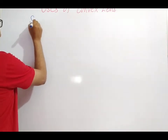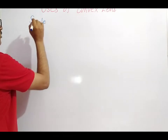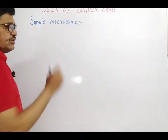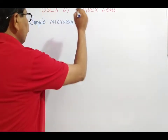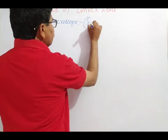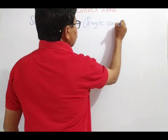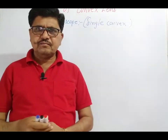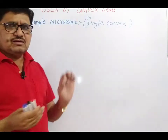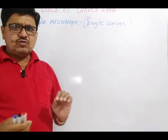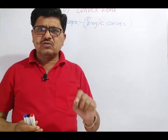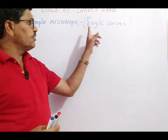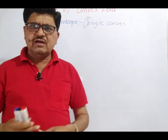What is the working of the simple microscope? The simple microscope acts as a single convex lens. When your eyes are unable to see any object clearly, at this time you can use the simple microscope — that means you can use the single convex lens, also known as the magnifying lens.